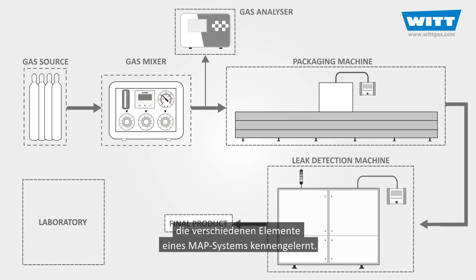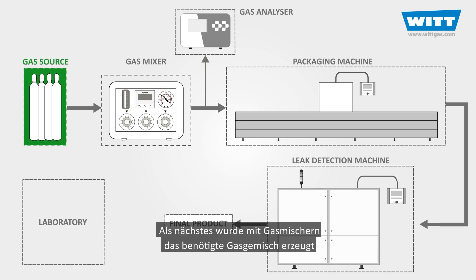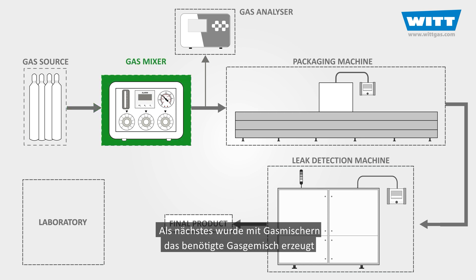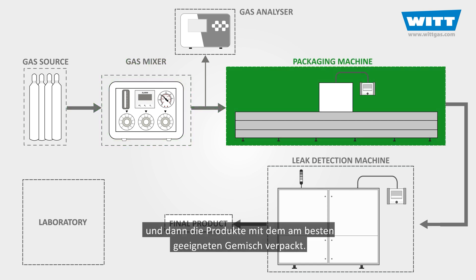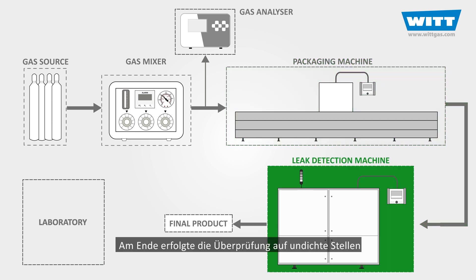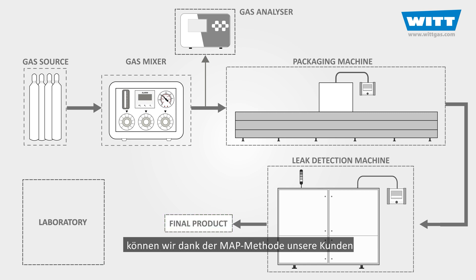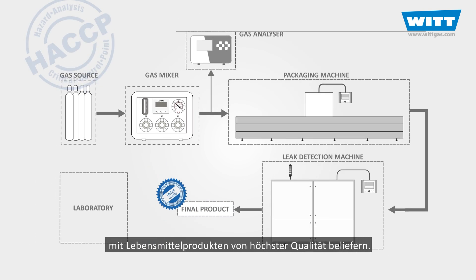In this video, we have gained a good understanding of the different elements of the MAP system. First, we started with the gas sources. Next, we made our desired gas mixture using the gas mixer, and then we packed our product with the most suitable mixture of gases. Finally, we ended up testing our package for any possible leakage with the leak detection machine. If our package is flawless and has no leaks, we can deliver top quality food products to customers, thanks to the MAP method.